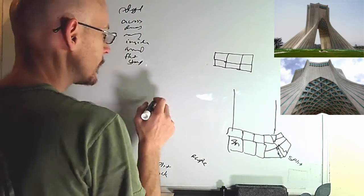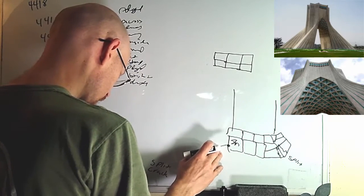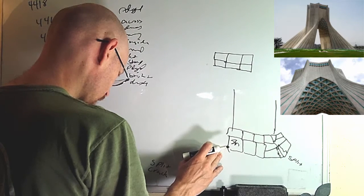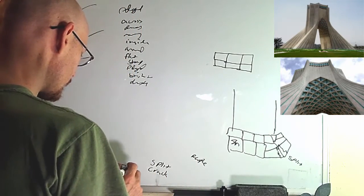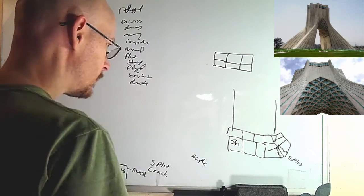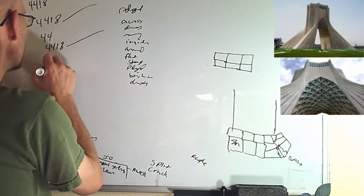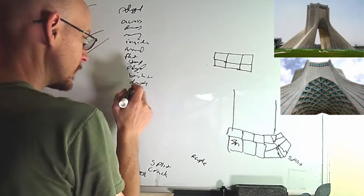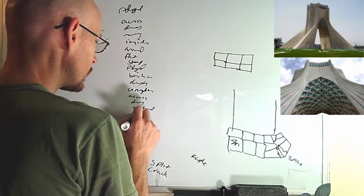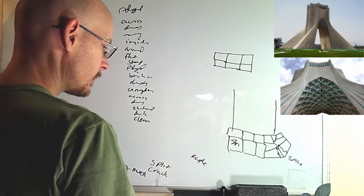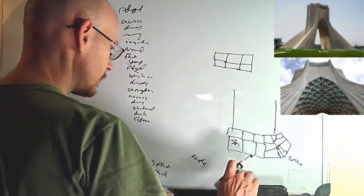Stony. Edged. I'm getting this idea here like a well — a water well. 4418. Cross, angular, cross, dense. Shadowed, dark. Again — clean, clean.